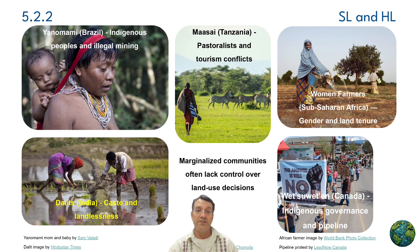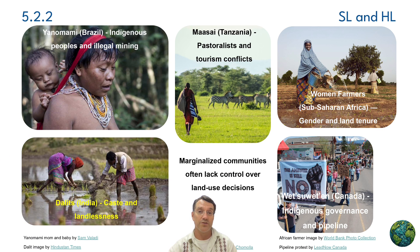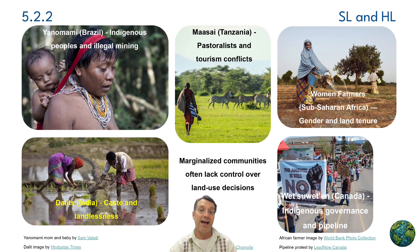These images show real communities affected by land use decisions — from the Wet'suwet'en people in Canada fighting pipeline development on their traditional lands, to the Yanomami in Brazil dealing with illegal mining, to the Maasai pastoralists in Tanzania and Kenya facing conflicts with tourism development. Each of these situations shows how marginalized communities often lack control over decisions that directly affect their traditional ways of life and their food security.